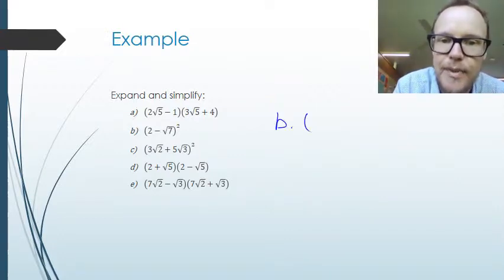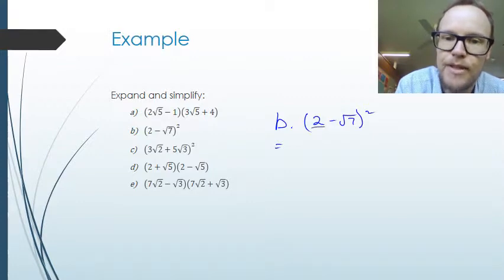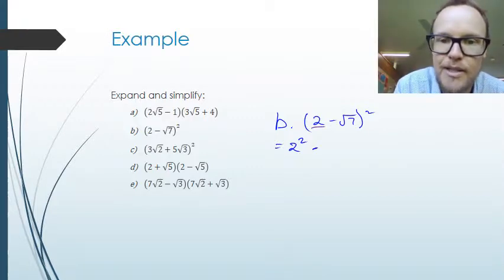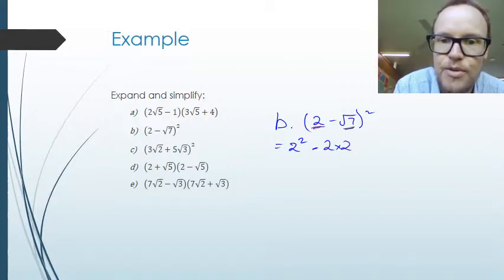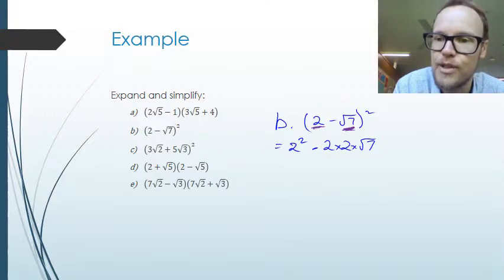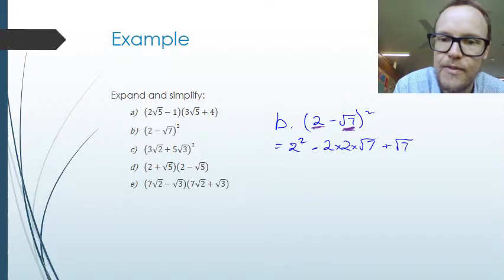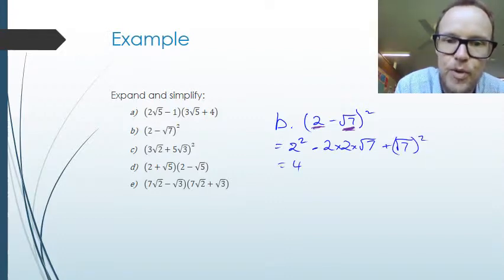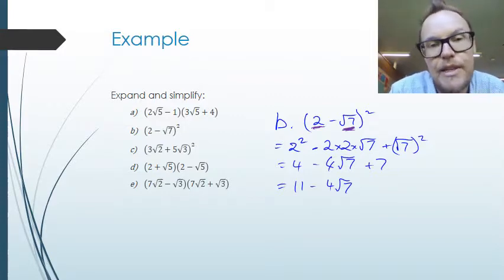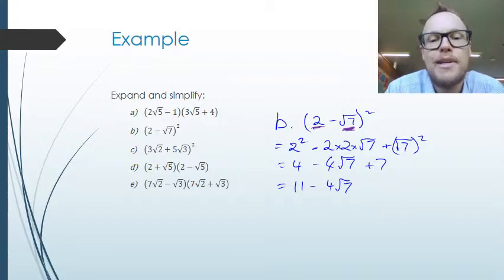Another way to do that question is to use the general form. We take the first number and square it — so 2 squared — then because it's minus in the middle, we do minus 2 times the first number times the second number, so minus 2 times 2 times root 7. Then we add the last value squared, so plus root 7 all squared. That gives us 4 minus 4 root 7 plus 7, which is 11 minus 4 root 7. Using the general form is much simpler and lets us cut out some of those middle steps.